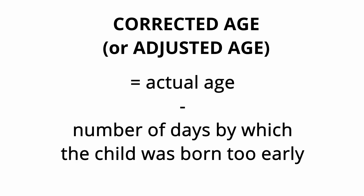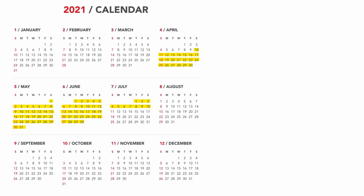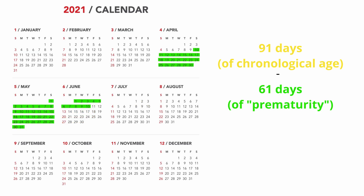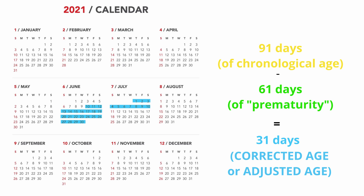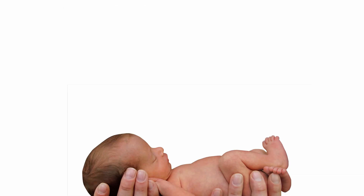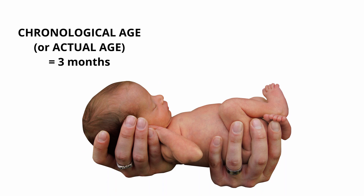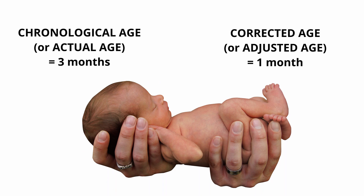Now, finally, we can calculate corrected age or adjusted age — these are synonyms. We do this by subtracting the number of days by which the child was born too early from the actual age. So, 91 days of chronological age minus 61 days of prematurity equals 31 days. This is the corrected age or adjusted age of your baby. Despite the fact that the child has been with you for 3 months, his corrected age is only 1 month.